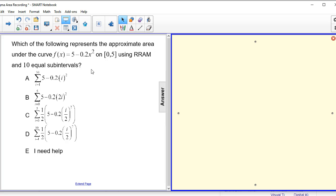Which of the following represents the approximate area under the curve f(x) = 5 - 0.2x² on the closed interval [0,5] using RRAM and 10 equal subintervals? Our first step is to calculate delta x, which is 1/2.